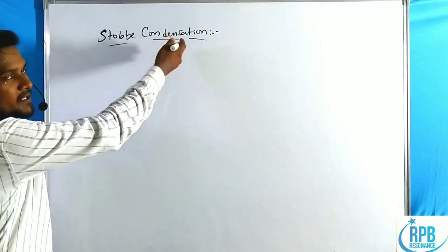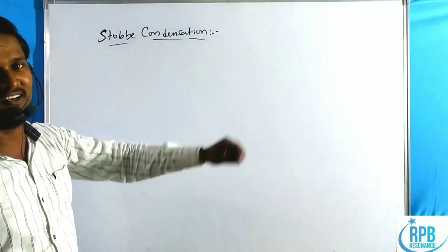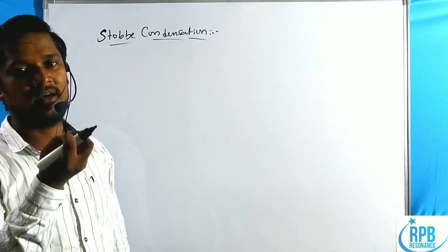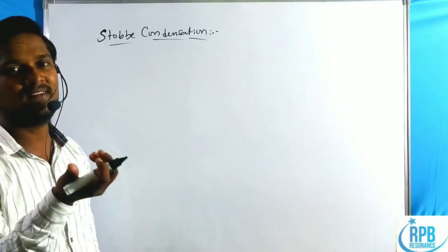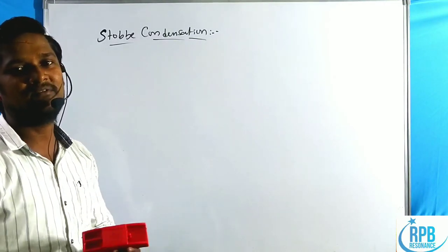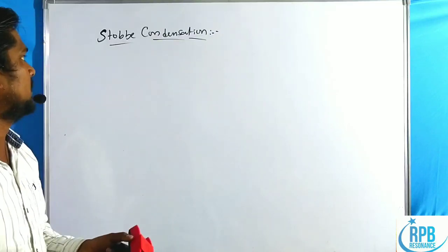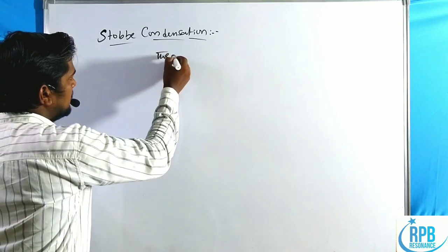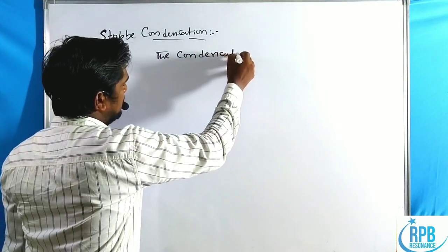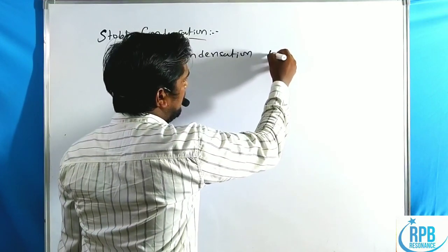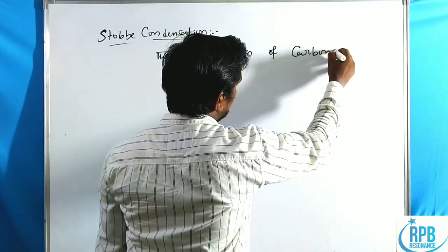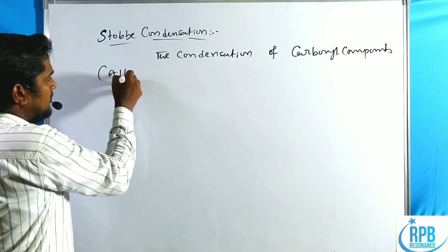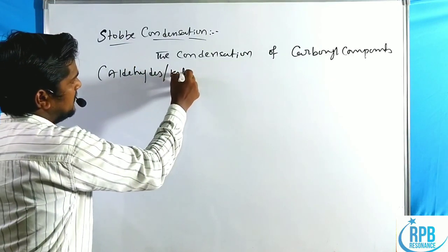Stobbe condensation itself defines the condensation reaction. Generally, Stobbe condensation is a method to form a C=C bond. Now here we will prepare alpha-beta unsaturated compounds. The definition: Stobbe condensation is the condensation of carbonyl compounds — generally aldehydes and ketones.